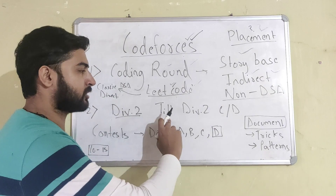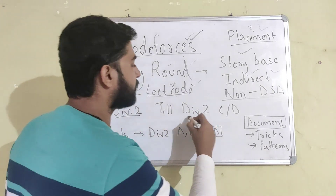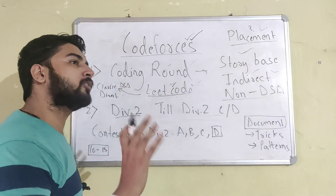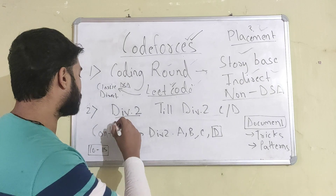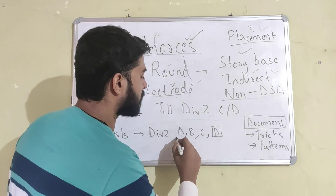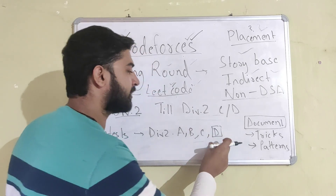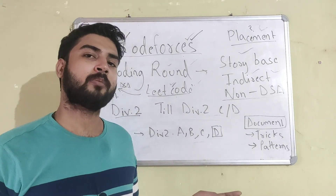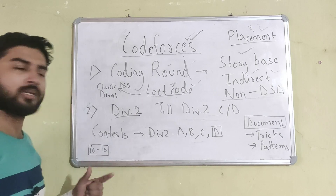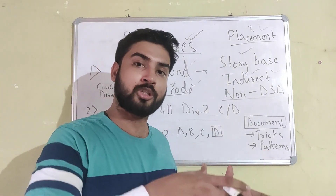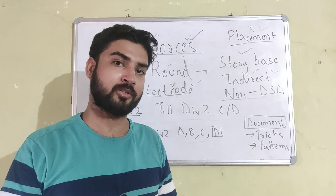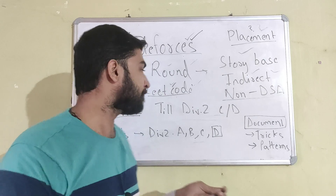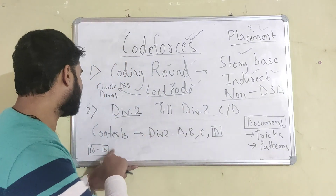What you should do is go on CodeForces and start solving problems from Div2 contests. Try to solve up to Div2A, B, C, and D if you can. Once you feel you're able to solve problems A and B, then you can go into contests. In the contest, the goal is to try to solve problems up to Div2A, B, C, and D if possible. D is a little bit difficult, so solving up to C is okay as a start. Give 10 to 15 contests. Even if you're only doing this for placements, try to give at least 10 to 15 contests because it puts you in the position of a coding round where you're competing against others under a time constraint.